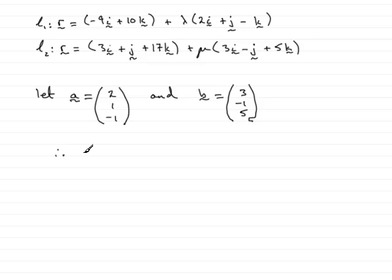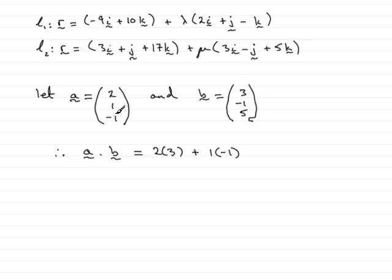So therefore the scalar product — the dot product, as some people call it — of A dot B, we hope will equal zero. Remember that you multiply the components together and add those results. So we have 2 times 3, plus 1 times negative 1, then plus minus 1 multiplied by 5. Working that out: 6 minus 1 minus 5, which equals 0.